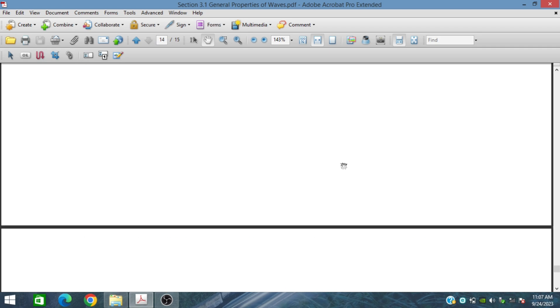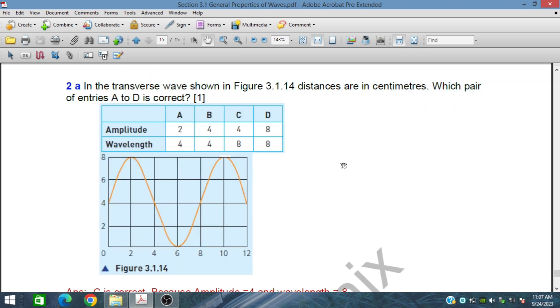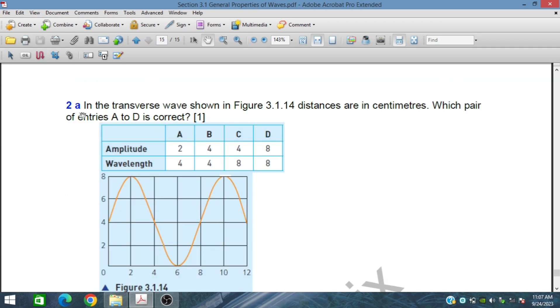This is question number 2. In a transverse wave shown in figure 3.1.14, distances are in centimeters. This is distance and this is displacement. Which pair of entries A to D is correct? This is our mean position and from mean position to the peak is called the amplitude. The amplitude is from 4 to 8, so the amplitude is 4 and wavelength is from 0 to 8.